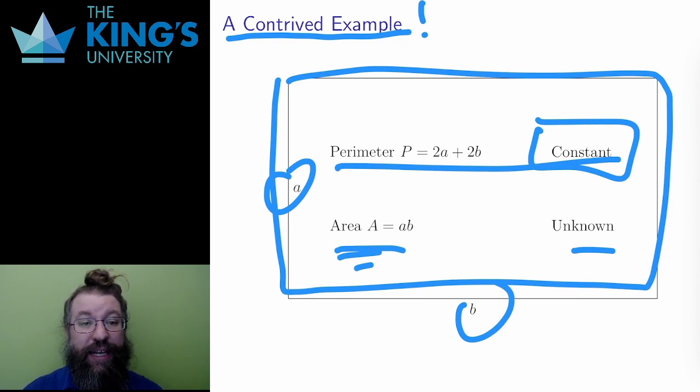The nice thing about this example is that it demonstrates the challenges of applied problems. This is an optimization problem. What's the largest area? However, I don't have an area function of one variable. I can't use calculus to solve this unless I have a function. All I have now is capital A equals ab, and ab is two variables.